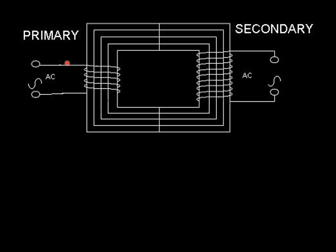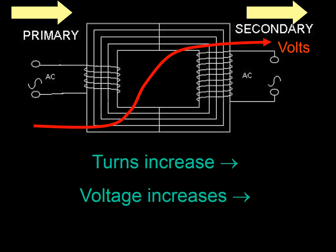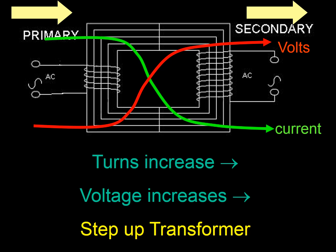This here is a step up transformer. We've got the primary on the left and the secondary on the right. The number of turns increases. You can see there's much more here than there is here. That means the voltage increases. If it's a voltage increase it must be a step up transformer. But don't forget current goes down, power always stays the same. You're not making any energy.